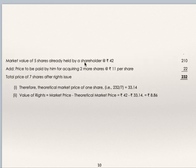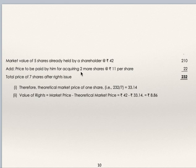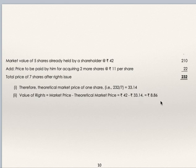Market value of 5 existing shares at Rs. 42 = Rs. 210. Add: 2 right shares at Rs. 11 = Rs. 22. Total = Rs. 232. Average = 232 ÷ 7 (5 existing + 2 right shares) = Rs. 33.14, which is the theoretical market price. Value of right = market price minus average = 42 − 33.14 = Rs. 8.86.